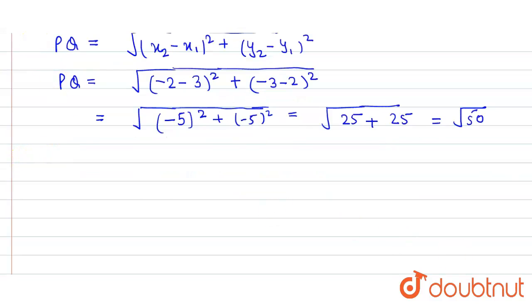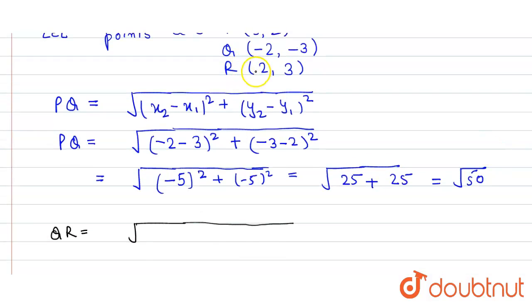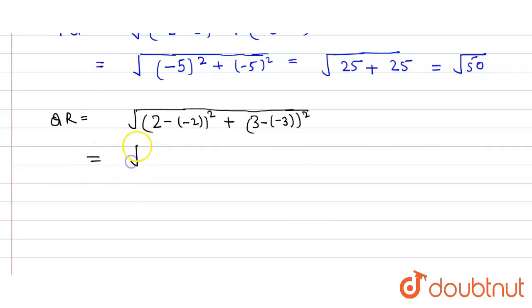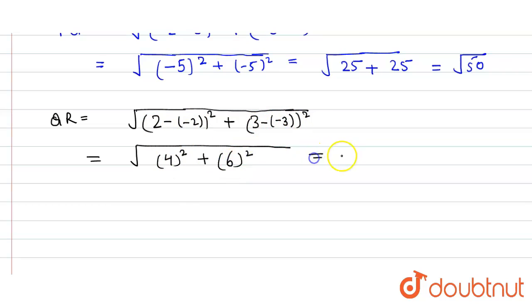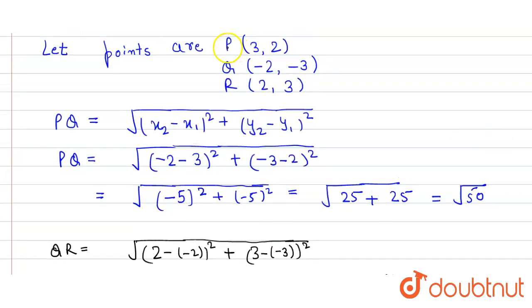Similarly, the distance QR equals √((2 - (-2))² + (3 - (-3))²) = √((4)² + (6)²) = √(16 + 36) = √52.